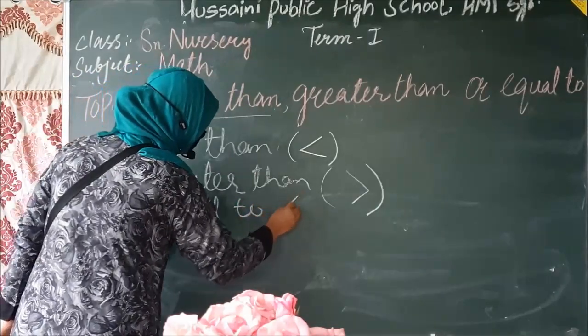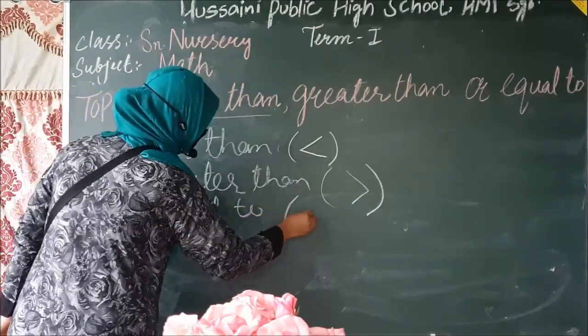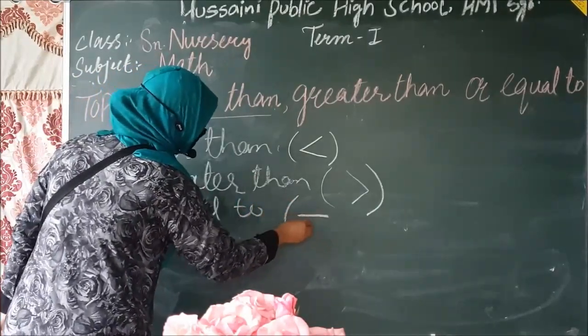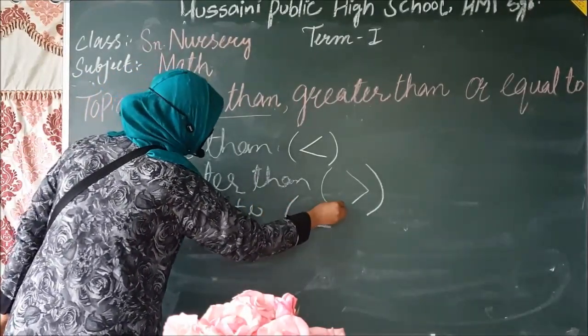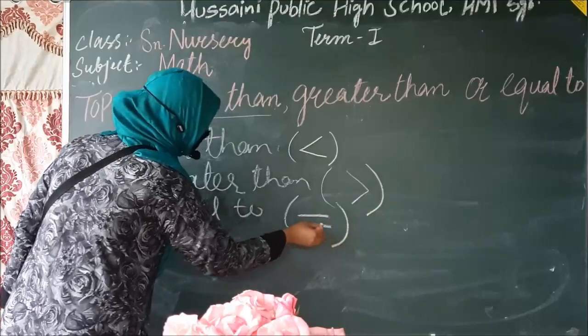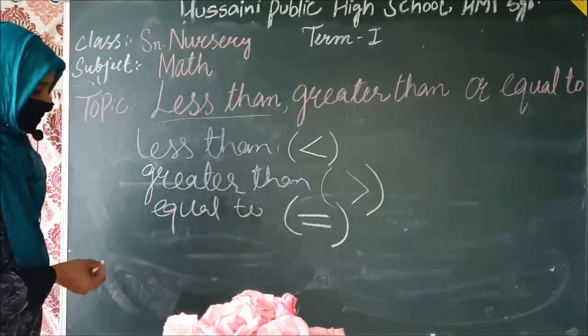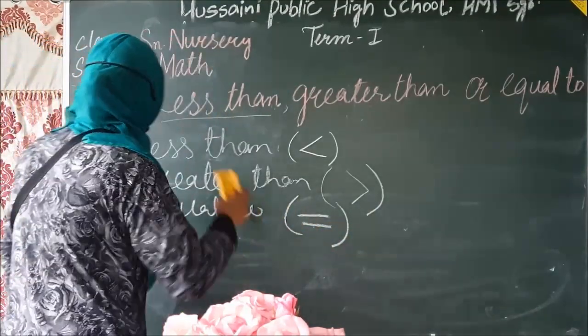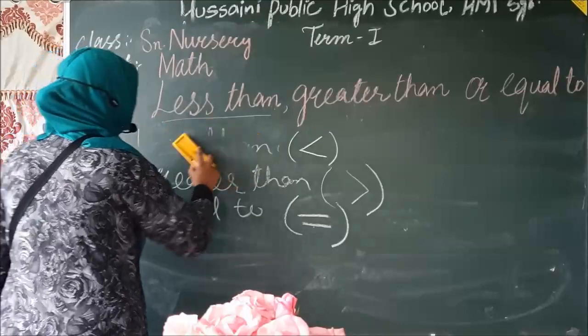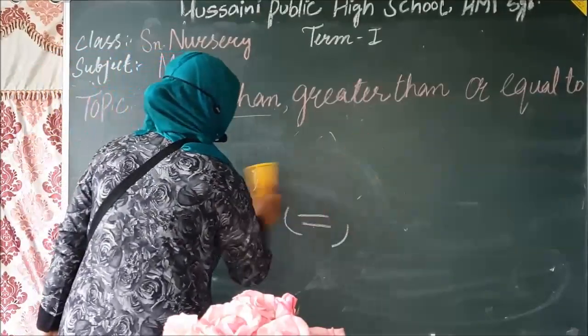Equal to होता है बराबर, यानि अगर दो numbers होंगे या दो चीज वो बराबर होंगी तो ये equal to की symbol लगाते हैं। अब हम ये सब समझेंगे कुछ examples से।